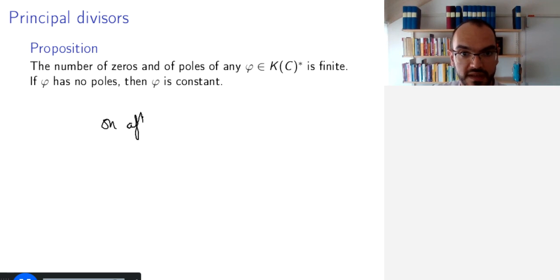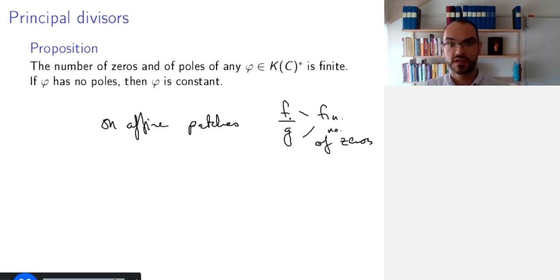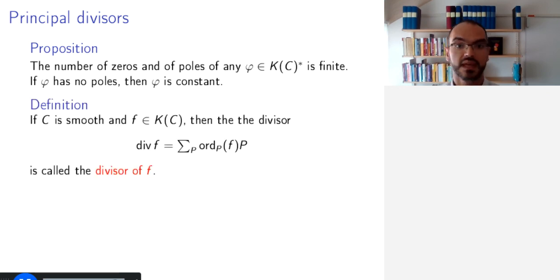Well, the rough idea is that on affine patches, we'll be able to write this as f divided by g. Both of these have a finite number of zeros. So, this will have a finite number of zeros and poles. And if it has no poles, then we know it's a regular function, so it has to be constant if it's a globally defined regular function.